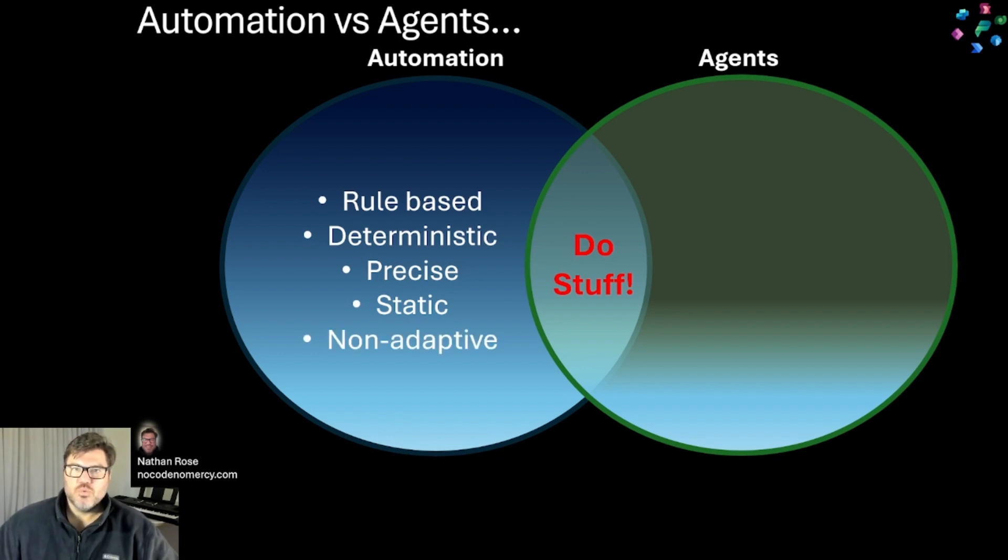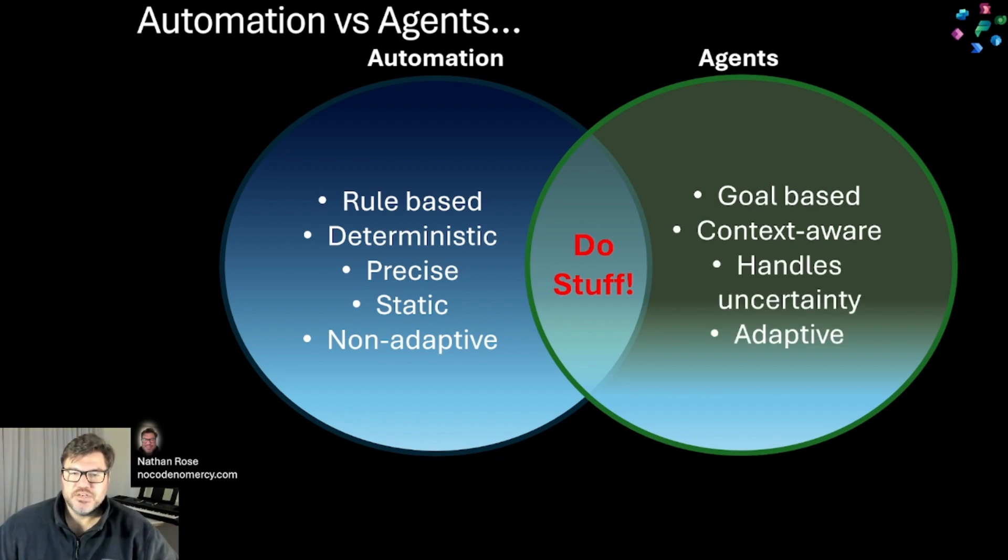and non-adaptive. Whereas AI agents are goal-based, context-aware, handle uncertainty, and adaptive.